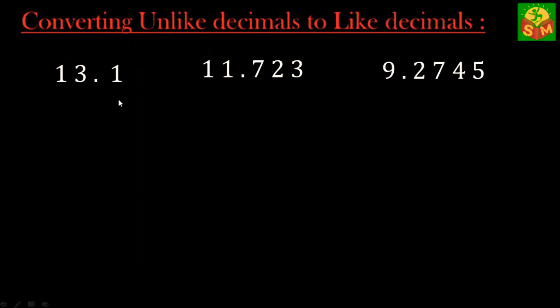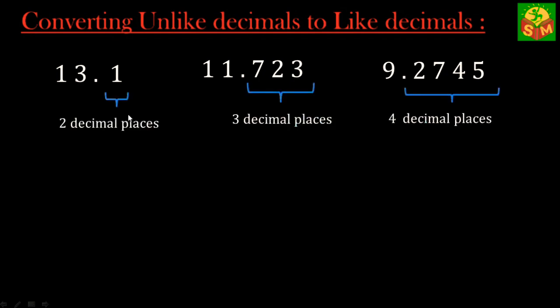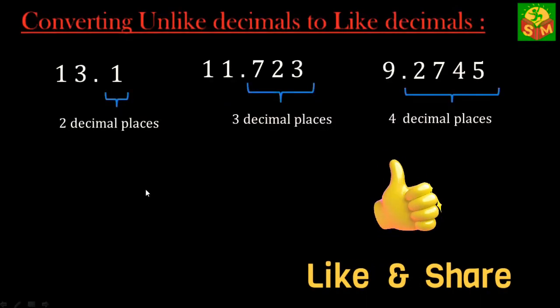Suppose let us take decimals 13.1, 11.723, and 9.2745. These are unlike decimals because they don't have same number of decimal places. The first thing we need to do is find the decimal which has the highest number of digits after the decimal point. Here 9.2745 has the maximum number of decimal places - that is four.